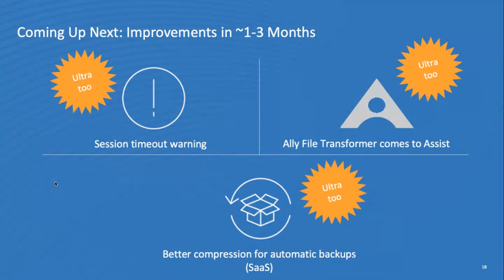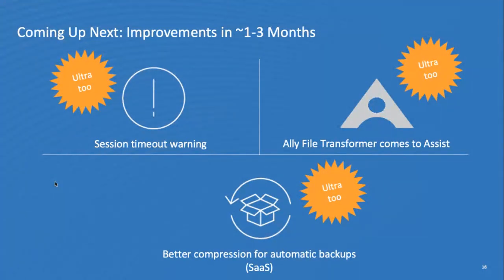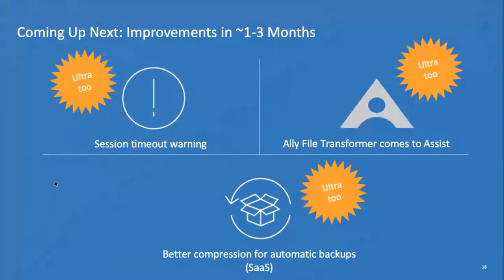Ally is a popular tool for improving accessibility of materials loaded into Blackboard Learn, but there are still important use cases for students — like group projects or research where materials may be complex or not in the student's native language. The Ally file transformer allows students to create a different version more suitable to their learning style. We're bringing that capability into Blackboard Assist when enabled, and we will not be requiring Ally licensing for that student use.